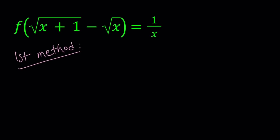For my first method, as well as for my second method, I'm going to set the expression inside the parentheses — that is, square root of x plus 1 minus square root of x — equal to another variable, t.